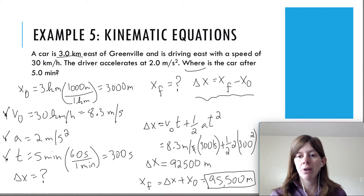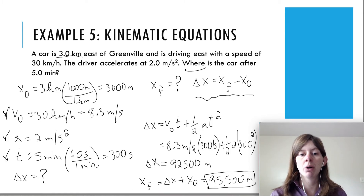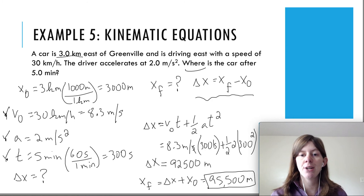That was all for this video. We'll do a lot more problems with kinematic equations in the following video on freefall — this was just a start to get used to using these equations. Remember: you need three out of the five variables — delta x, V initial, V final, acceleration, or time. You need three out of five, you're looking for one of the others, find the correct equation, and plug the numbers in.